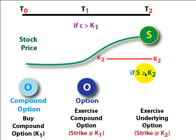Then as a typical call option, we will exercise this if in fact the stock is greater than K2, the exercise price. So now at T2, we exercise the underlying option by paying the strike at K2 and receiving the underlying asset, in this case the stock.